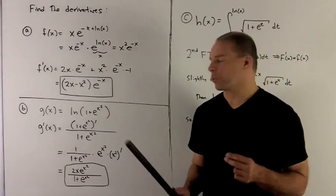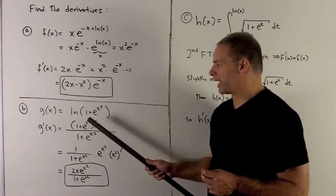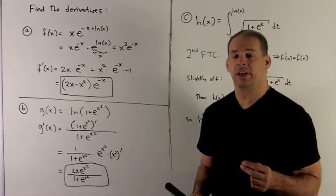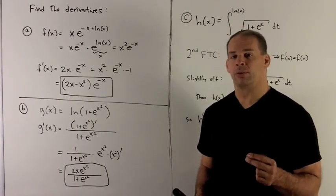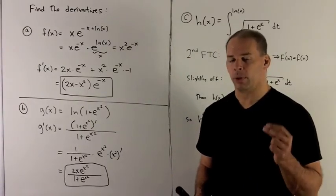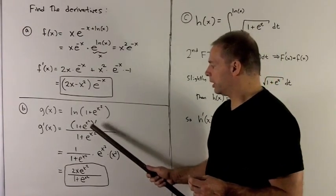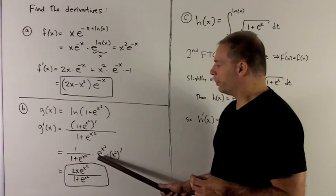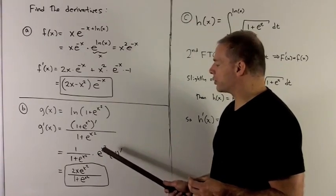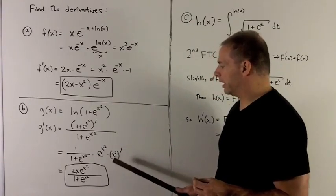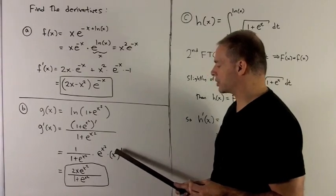Again we use the rule. This is e to the u with u equal to x squared, and the rule is derivative is just going to be rewrite e to the u, multiply by a derivative of u. So that's going to turn into rewrite e to the u, that's e to the x squared, and then derivative of u is just going to be 2x. So derivative of x squared is 2x.